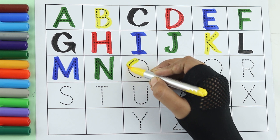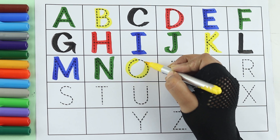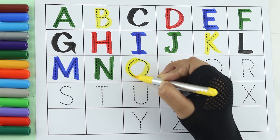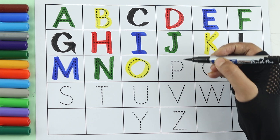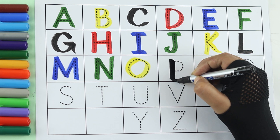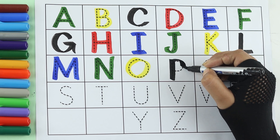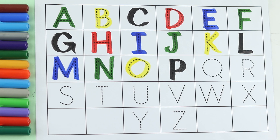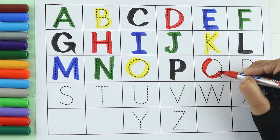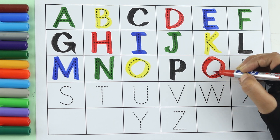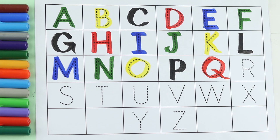Yellow color. O. O for orange. Black color. P. P for pen. Red color. Q. Q for queen.